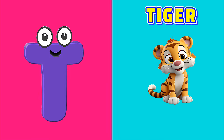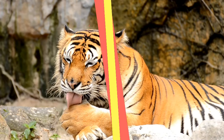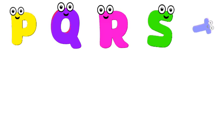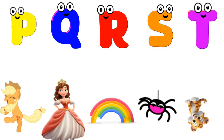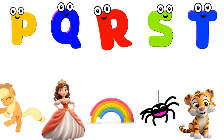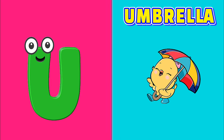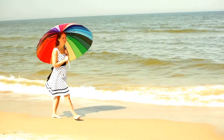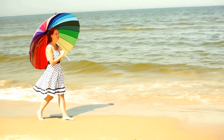T is for Tiger. T, Tiger, T, Tiger, T. U is for Umbrella. U, Umbrella, U, Umbrella.